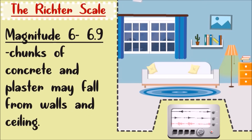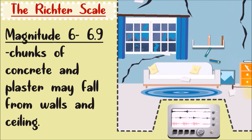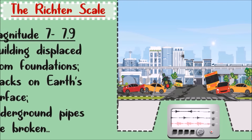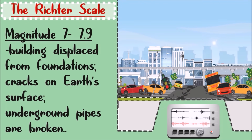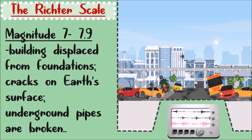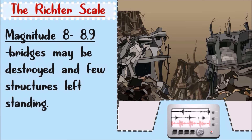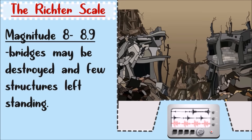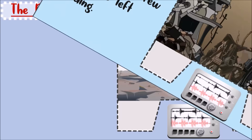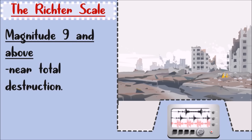For magnitude 6 to 6.9, earthquakes may cause cracks on concrete walls and chunks of plaster and concrete may fall from the walls. For magnitude 7 to 7.9, buildings may be displaced from their foundations, cracks on the Earth's surface may occur, and some underground pipes may be broken. If the seismograph measures 8 to 8.9 magnitude, bridges may be destroyed and only few structures may be left standing. If the magnitude is 9 and above, it describes near total destruction.